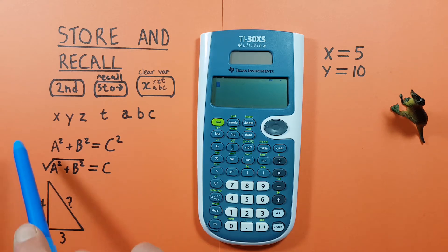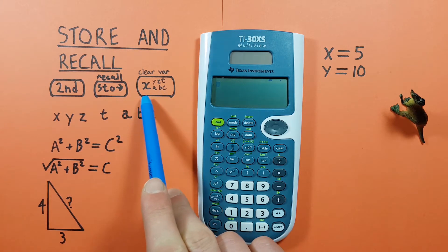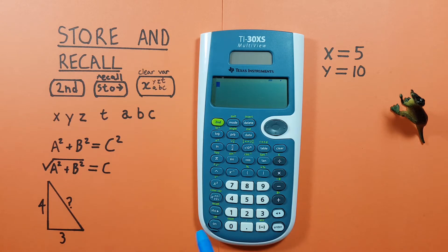To do this we'll use the second function key that looks like this located here, the store and recall key that looks like this located here, as well as the memory slot key that looks like this with all these letters on it located here.